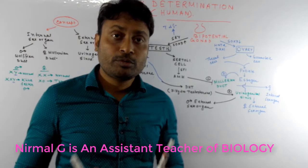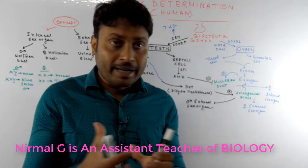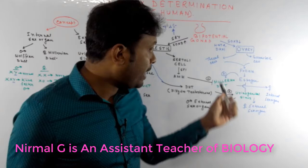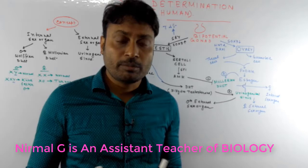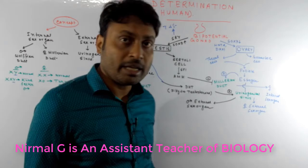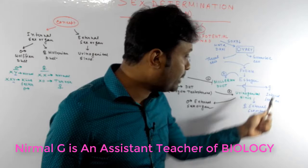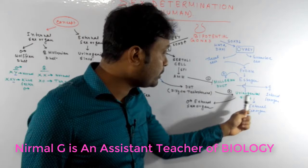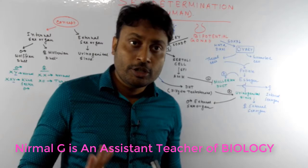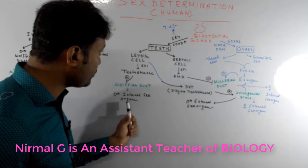Now switching to female development: just after the development of the ovary, two cell types are present — the thecal cell and the granulosa cell — and these two cells collectively form the follicle. This is called the two-cell theory. These two cells are responsible for the synthesis of the important female sex hormone estrogen. Estrogen activates the Müllerian duct, causing its further development, and the female internal sex organs develop from this Müllerian duct. Estrogen also acts upon the urogenital sinus, causing the further development of the female external sex organs.